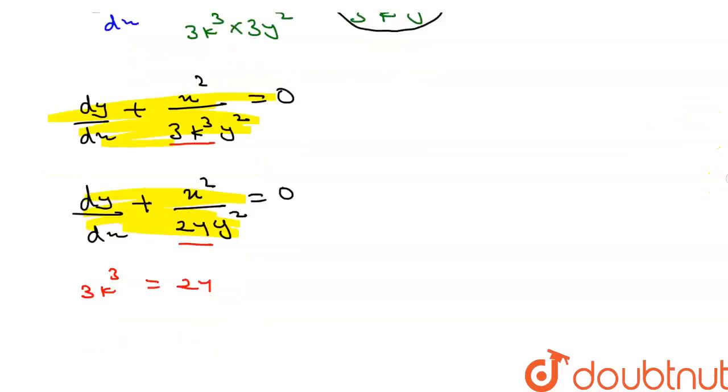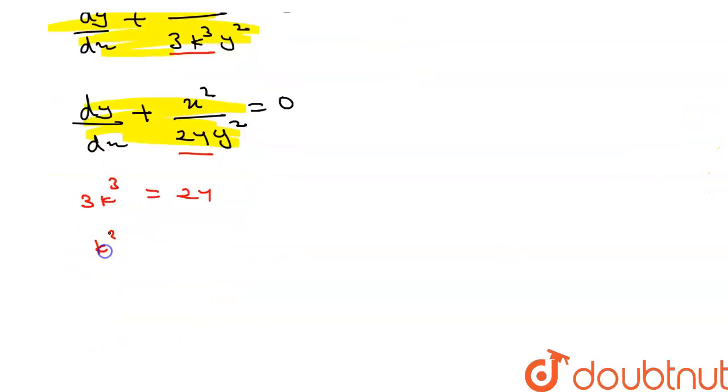So from here we can write as k cube equal to 24 by 3 which equal to 8, k cube equal to 8. So we can write as k equals to 2. So this is the value of k.